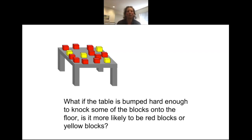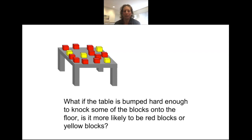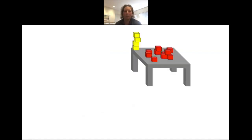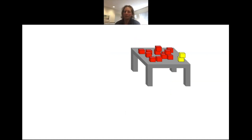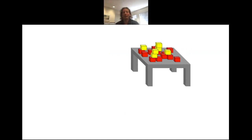I specify the task not with a training set but with a sentence in English: 'What if the table is bumped hard enough to knock some blocks onto the floor — is it more likely to be red blocks or yellow blocks?' Going through several different scenes, the typical answers are: red, yellow, red, yellow, yellow, yellow, red, yellow. There's variance, and some answers are quicker and slower — both signatures of uncertainty. The way we model this is as uncertainty in an approximate simulation of what's going on.